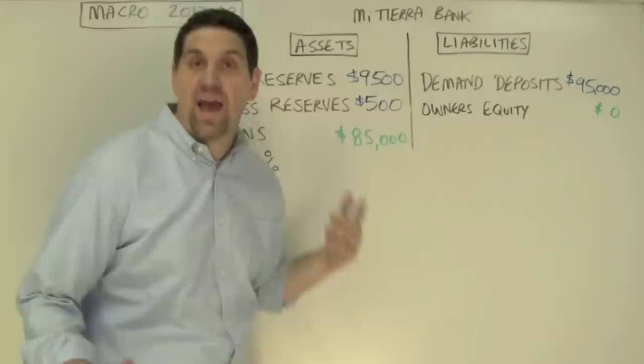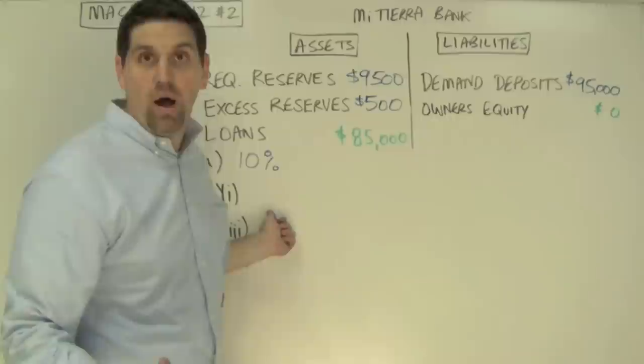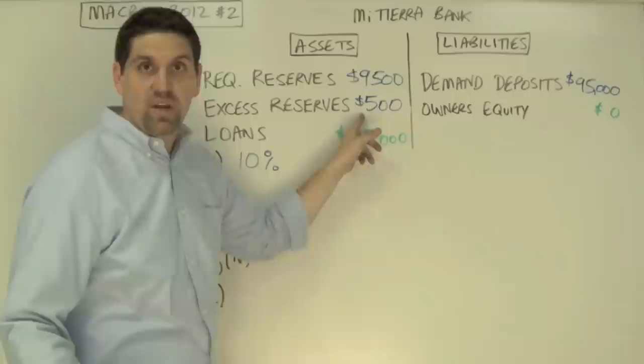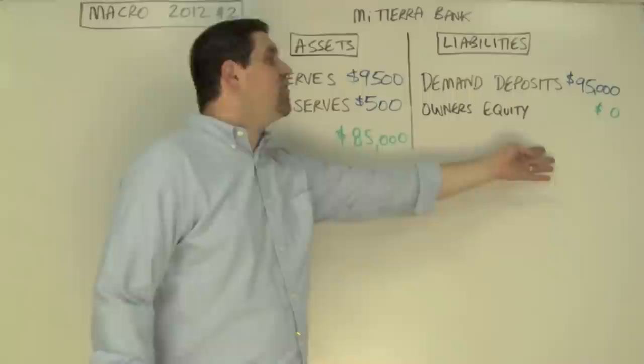B1 asked what happens to the reserves of the bank because of that $5,000 withdrawal. Before the withdrawal, reserves were $15,000 — $10,000 for required reserves and another $5,000 of excess reserves. But now it's only $10,000, so the reserves decreased by $5,000. Which makes sense: if someone takes out $5,000, your reserves are going to decrease by $5,000.